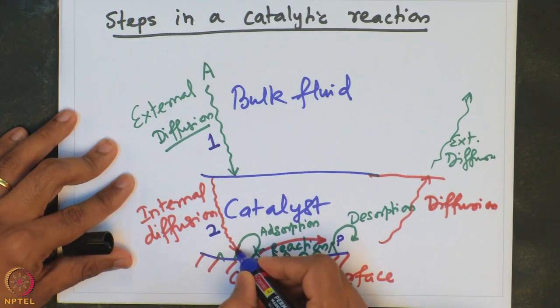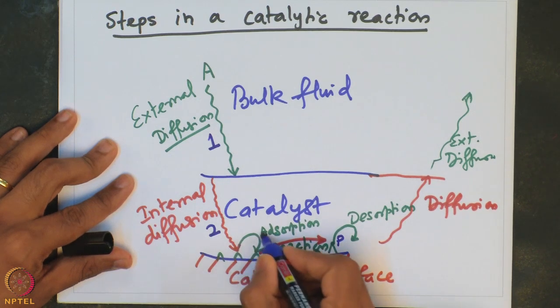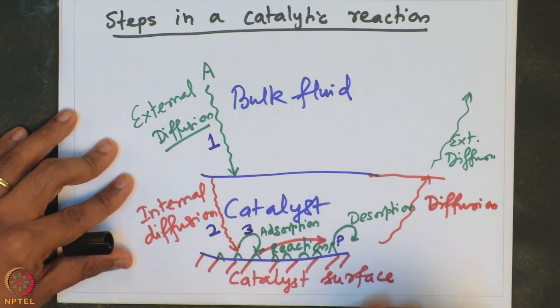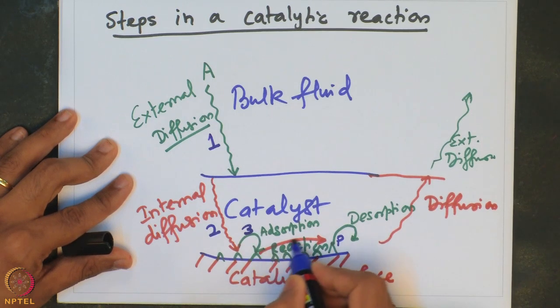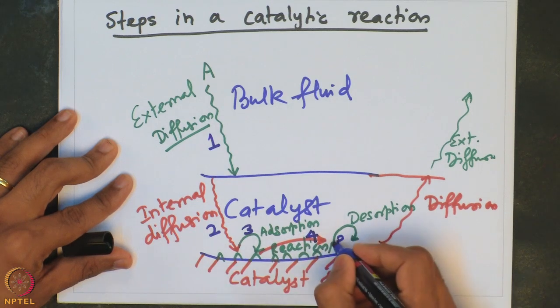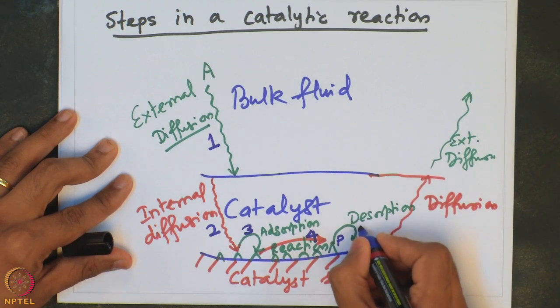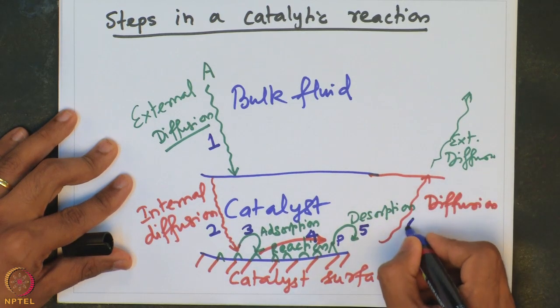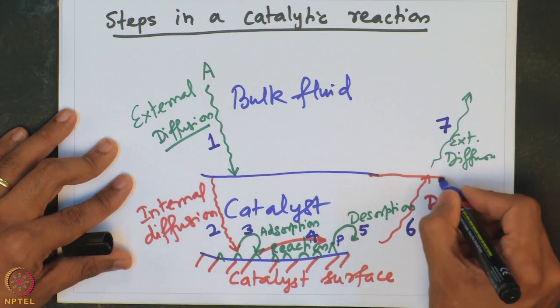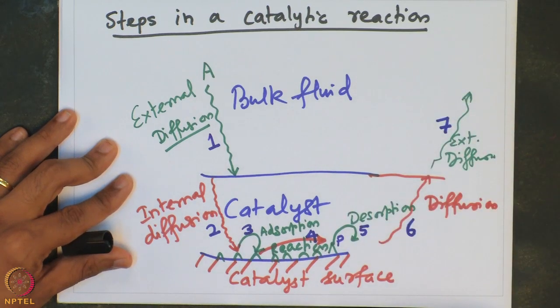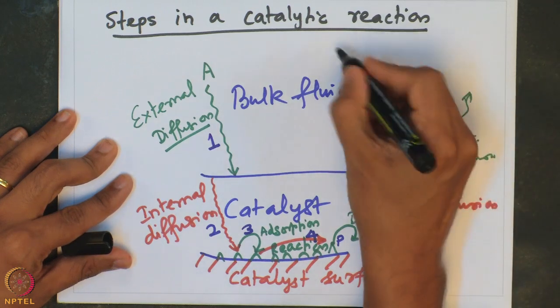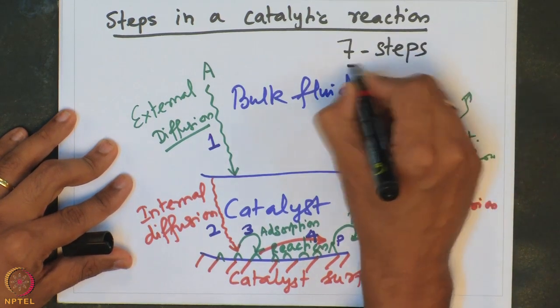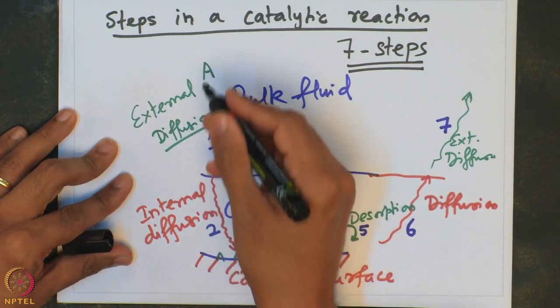The external diffusion is step 1, where the species diffuses from the bulk to the surface of the catalyst pellet. Step 2 is internal diffusion, where the species reaches the active surface. Step 3 is adsorption. Step 4 is the reaction to form the product. Step 5 is desorption from the active sites. Step 6 is internal diffusion of the product back to the surface of the catalyst pellet. Step 7 is external diffusion of the product species from the catalyst pellet surface back into the bulk fluid.